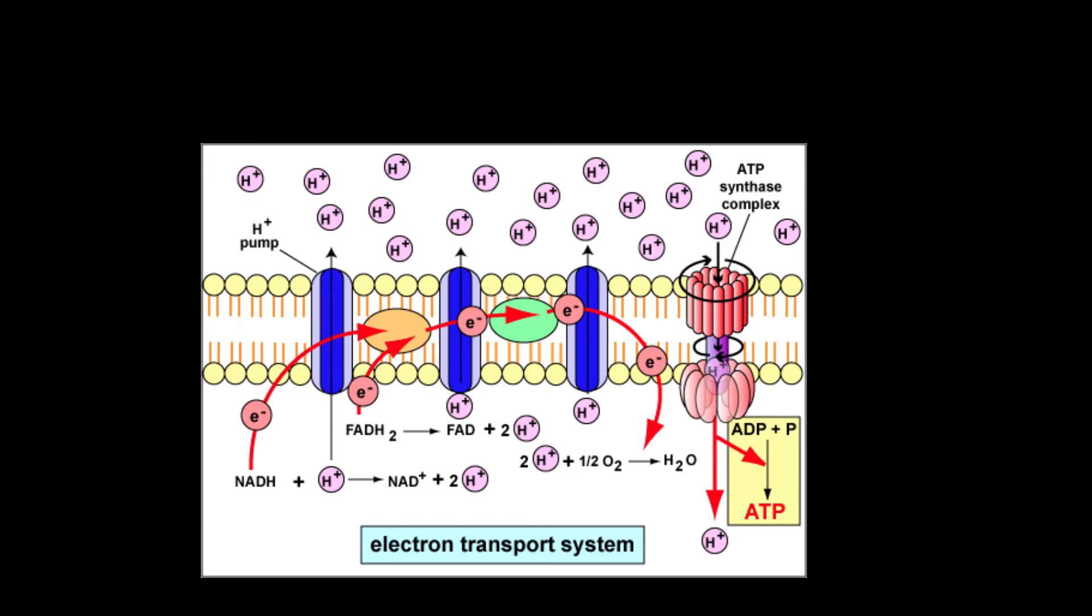The flow of electrons down the chain is highly energetic and allows the active transport of hydrogen ions across the membrane. Basically, this means most of the members of the electron transport chain are extracting energy from the electrons as they're passed down the chain and use the energy they extract to push hydrogen ions across the membrane, forming a hydrogen ion concentration gradient across the membrane.